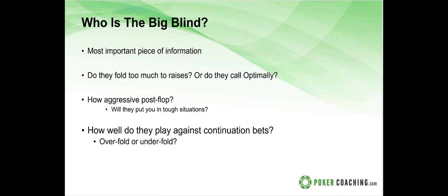The two most frequent actions will be either limping or raising from the small blind and seeing a flop. How they play against continuation bets will have a big factor on our win rate — whether they over-fold, under-fold, or raise your continuation bets frequently. These questions are all connected and determine how much you want to adjust your strategy from the baseline.